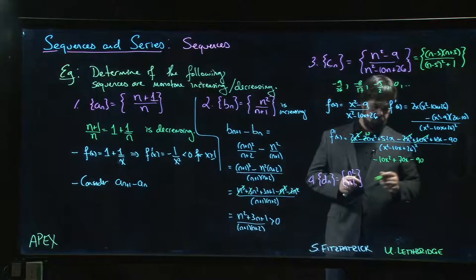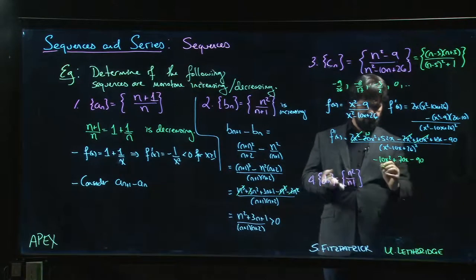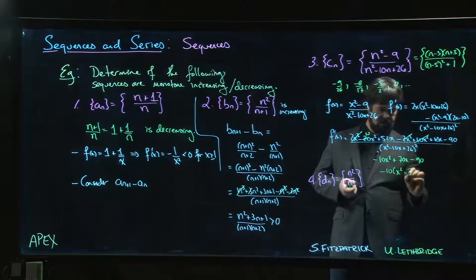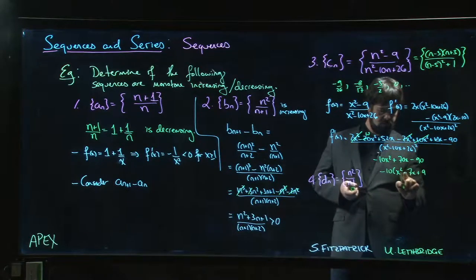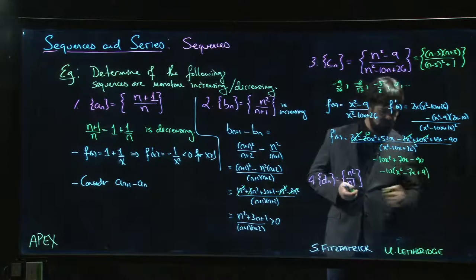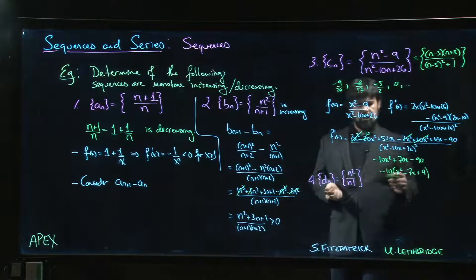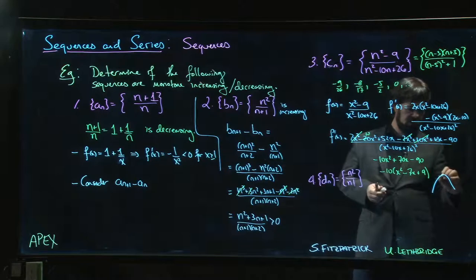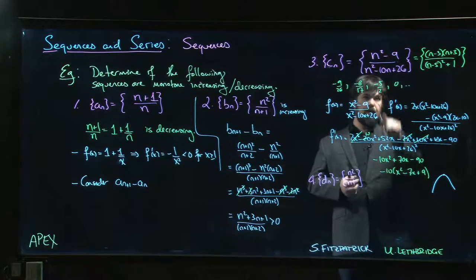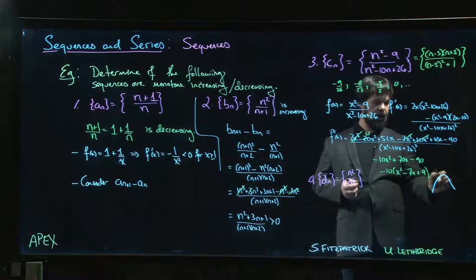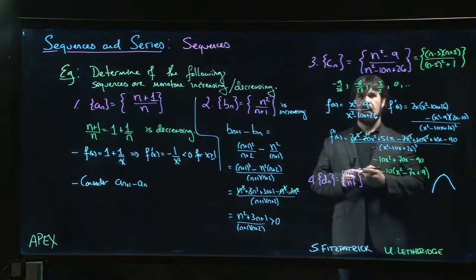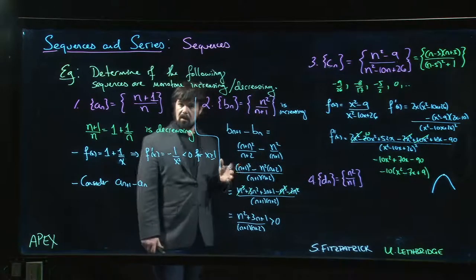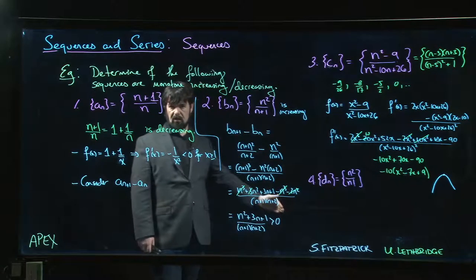This is a quadratic and it's opening downwards. We can, in fact, we can pull out the minus 10. So we have x squared minus 7x plus 9. And it doesn't factor super nice, but we can definitely tell that it's a quadratic. It's opening downwards. So these terms are initially increasing towards sort of that vertex in this quadratic. So there's a few values of n at the beginning where we're on this side of the quadratic and things are increasing. Once we hit that maximum, it's going to be decreasing. So we expect that this is an eventually decreasing sequence. It's not decreasing from the beginning. It's increasing a bit at the start, but it's eventually going to start decreasing, which is good enough.